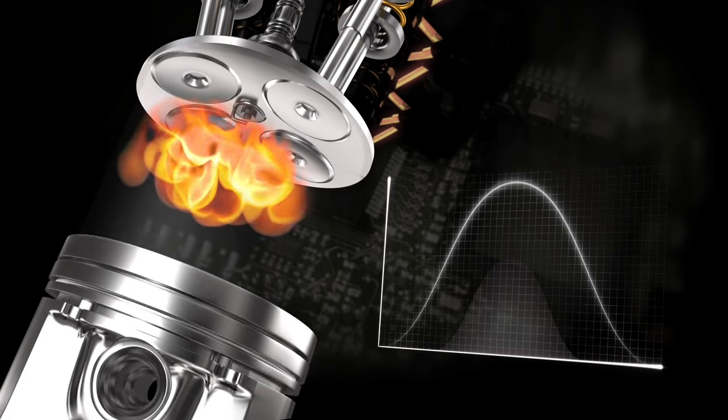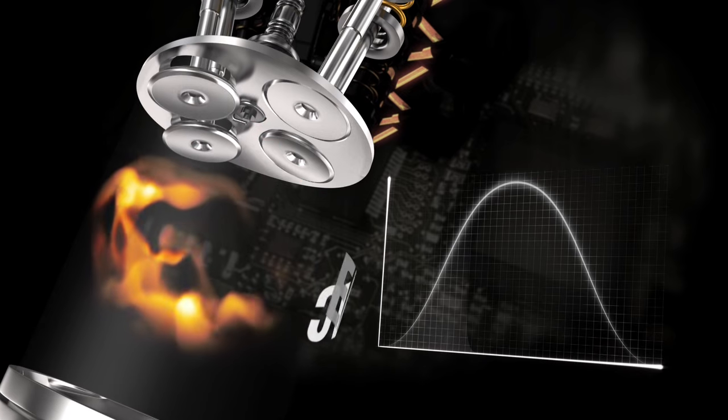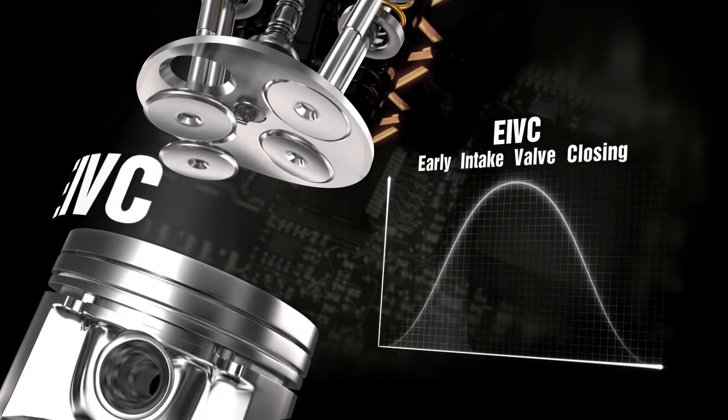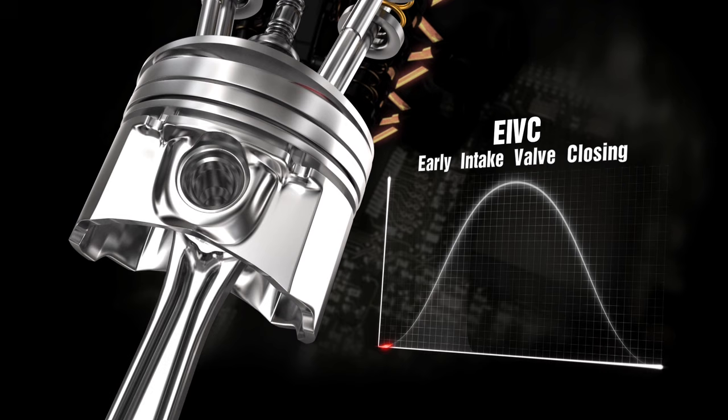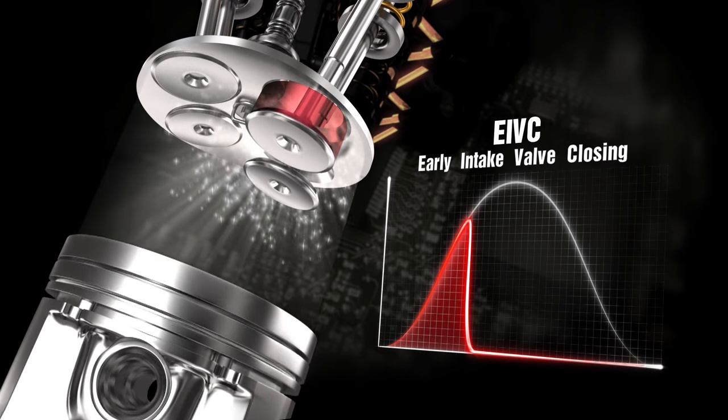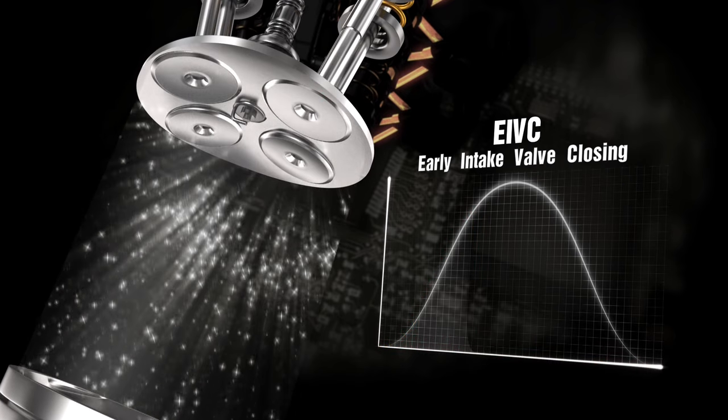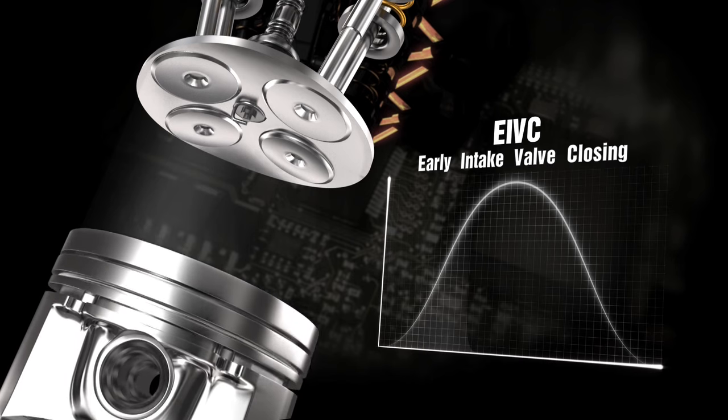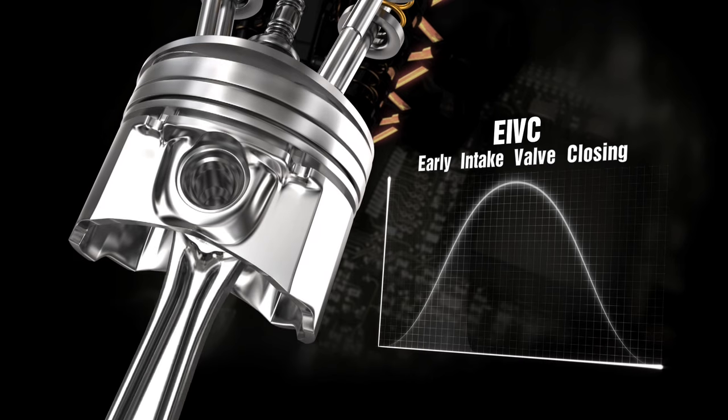At medium-low RPM torques and engine partial load, EIVC, early intake valve closing, optimizes volume efficiency and reduces pumping losses. Undesired back flow into the manifold is avoided, and air mass trapped in the cylinder optimized.